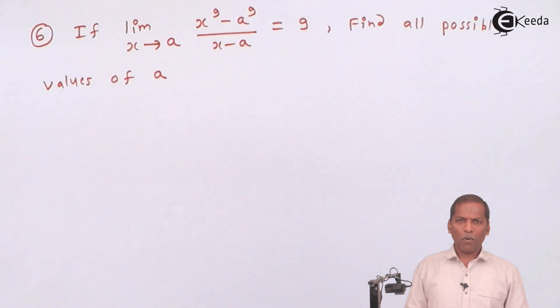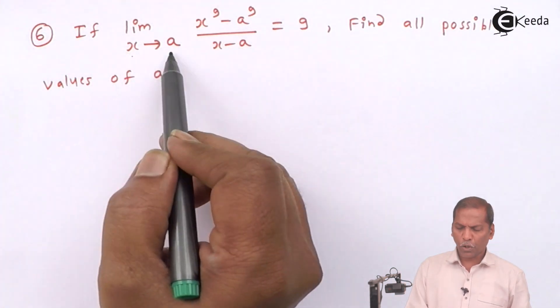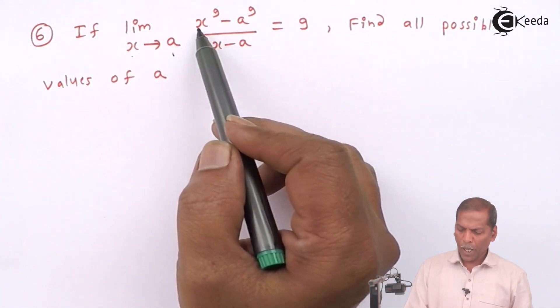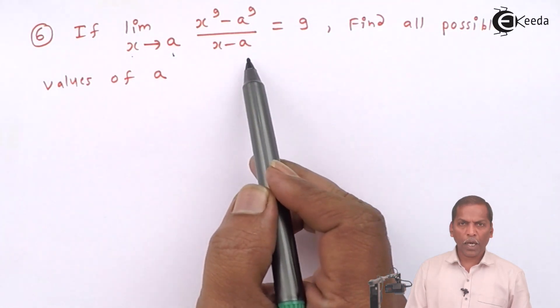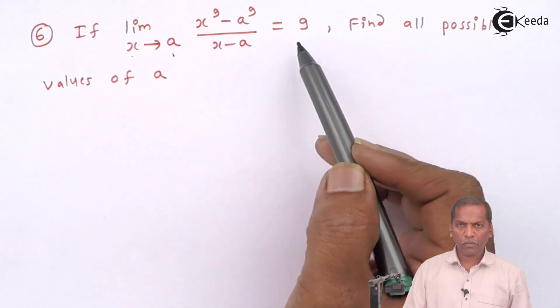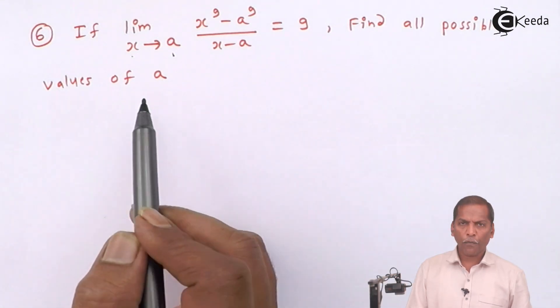Hello friends, now we see problem number 6 which is based on rules of limits of chapter limits. The problem is: if limit x tends to a, x raised to 9 minus a raised to 9 upon x minus a is equal to 9, find all possible values of a.